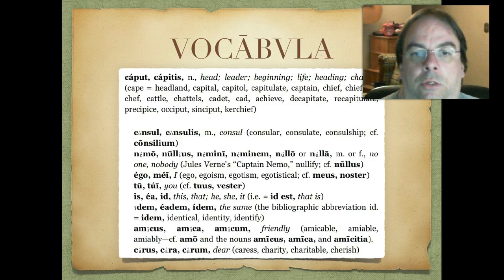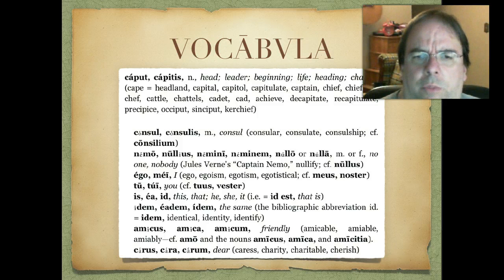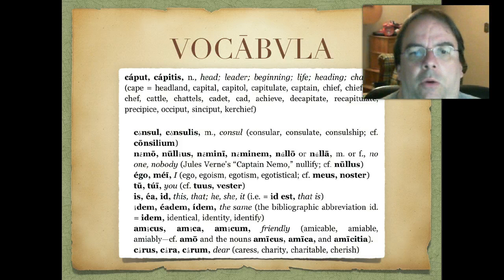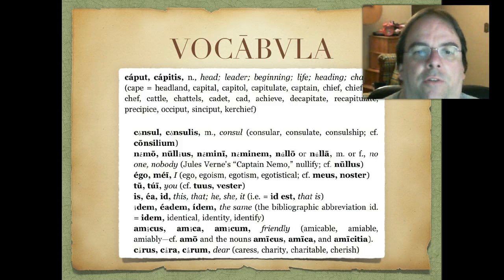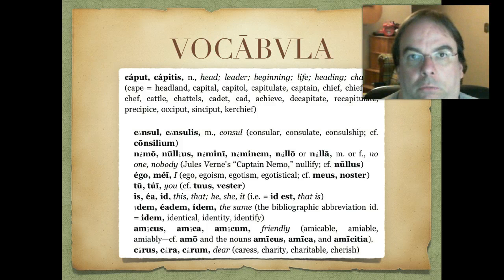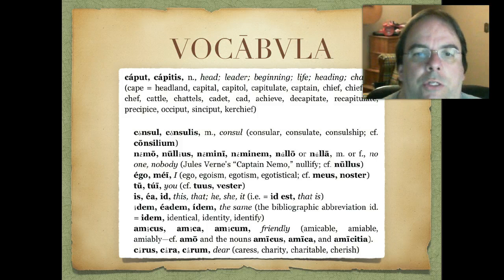Consul, consulis — that would just be a consul, one of those people who work in the government. Here's a strange one: it gives us all the forms because the whole thing's irregular and it only has singular forms. Nemo — like Captain Nemo. Nullius is the genitive singular. Nemini, dative. Neminem, accusative. And ablative is either nullo or nulla, depending on whether it's masculine or feminine. That just means no one or nobody. So Captain Nemo would be Captain Nobody — just a play on words that Jules Verne had.